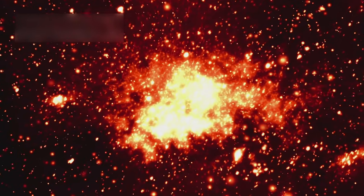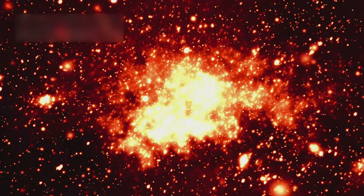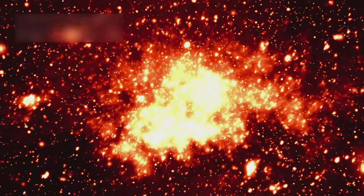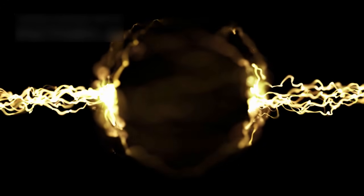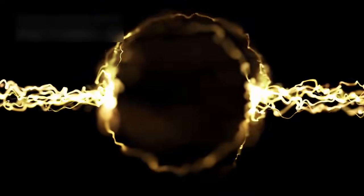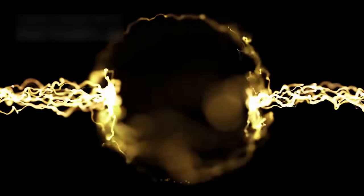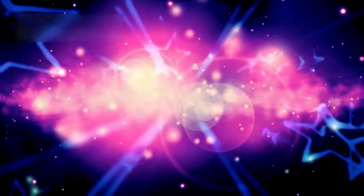Eventually, this process will lead to a supernova explosion, one of the most powerful events in the universe. When the core collapses, it will release a burst of light so intense that Betelgeuse would shine brighter than the full moon and be visible during daylight for weeks. Such an event would be a historic moment for humanity.